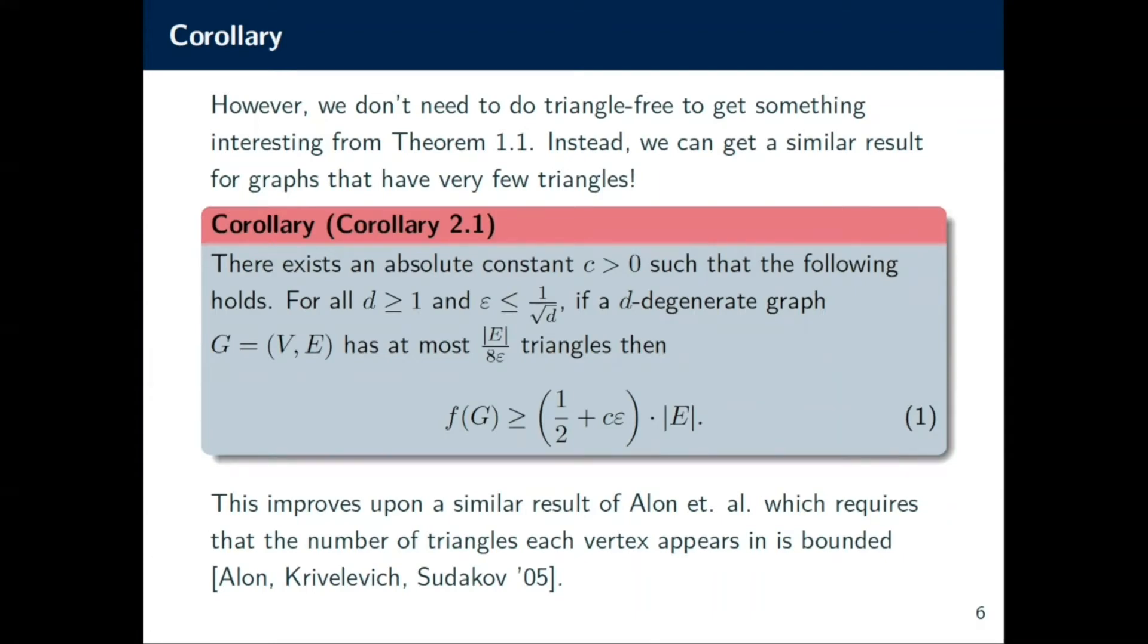This result was already somewhat known, but it actually improves upon a result of Alon et al, where they showed that they could get a similar bound so long as they knew that every vertex was participating in a few triangles. Our result implies that, but here we only need a global bound that says the total number of triangles is manageable.